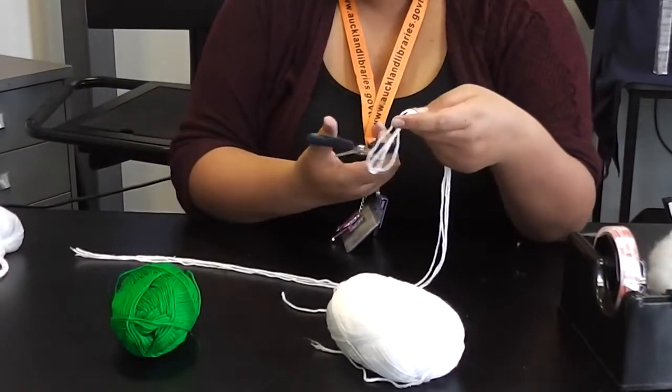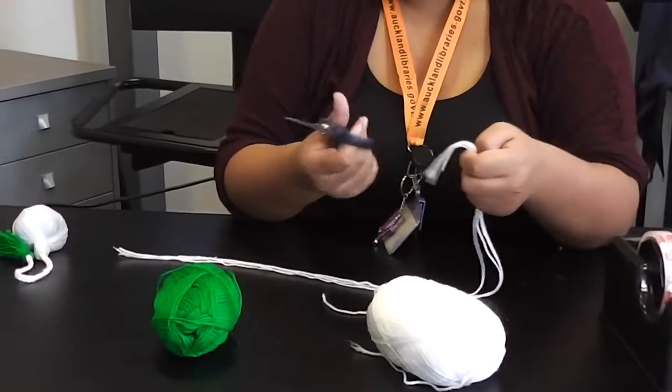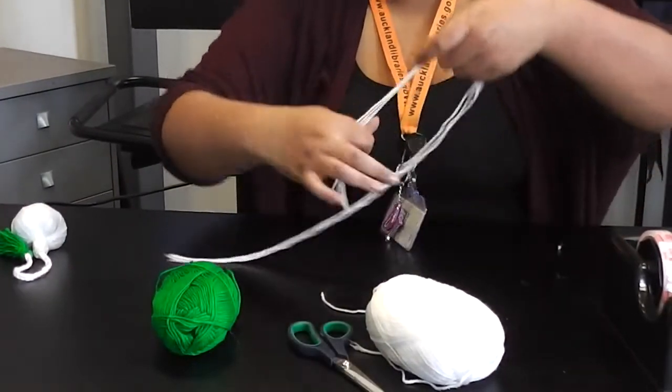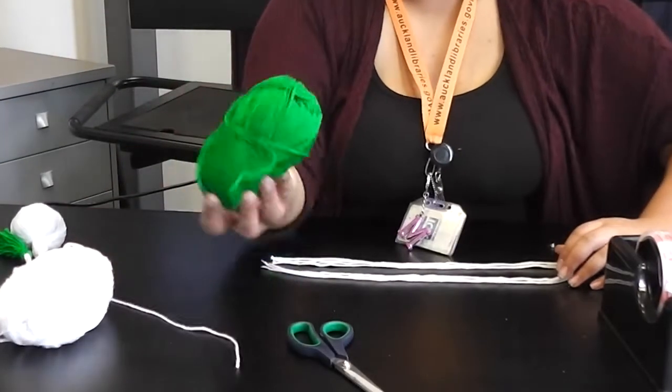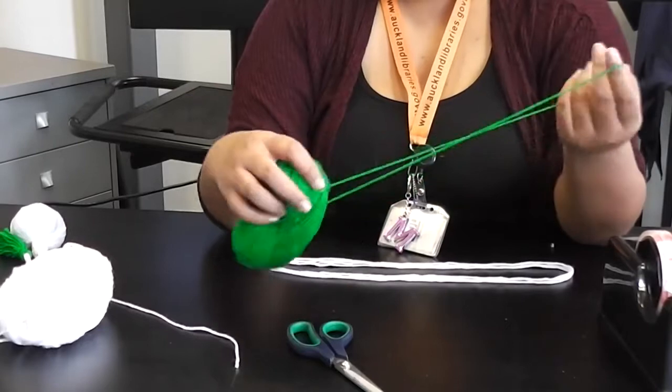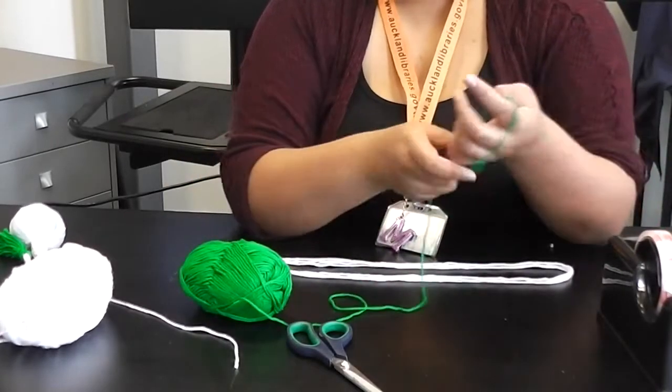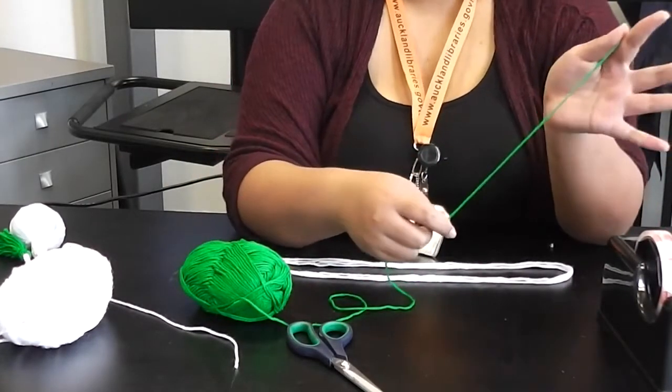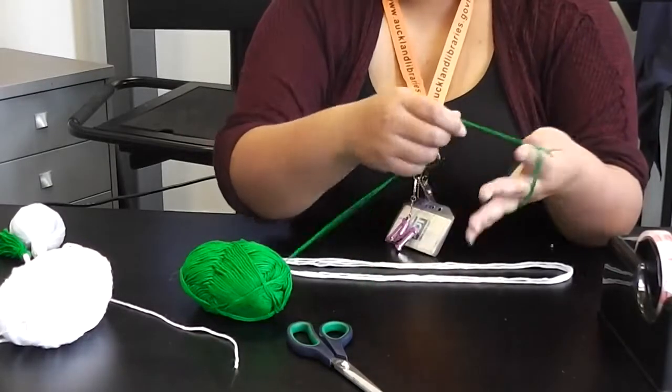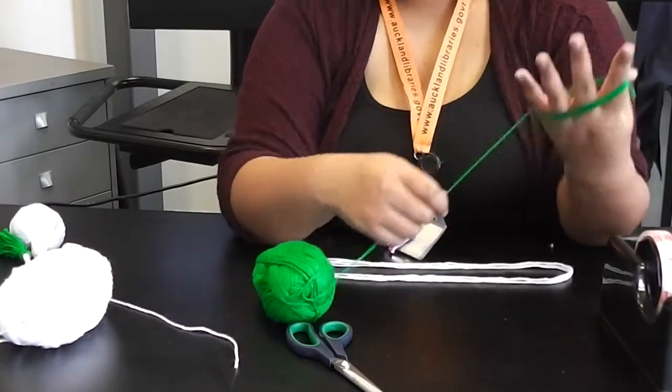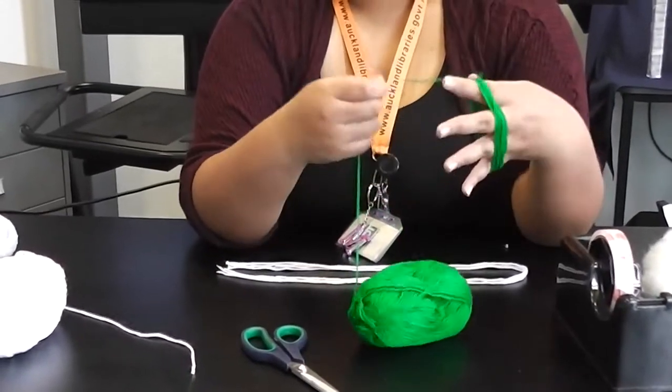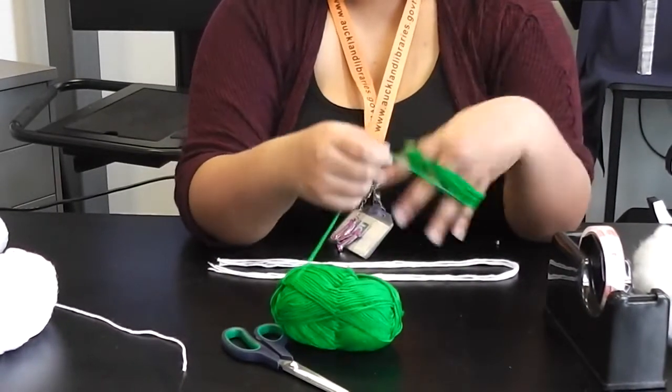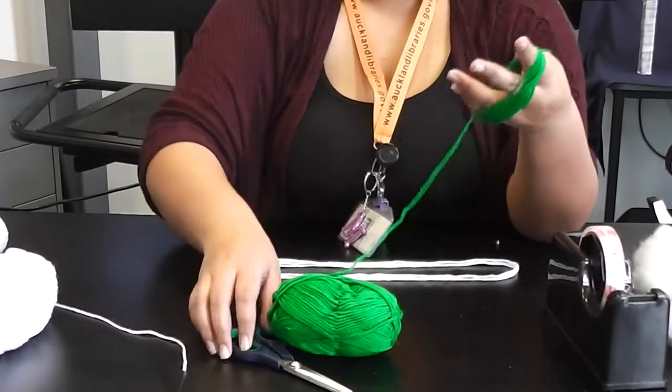So we'll just snip these and put it in half like so. Then we're going to grab the second colour and we're just going to wrap these so we can have the length for our pompom. And you can wrap that about ten times and if you want a bigger pompom you can just wrap it some more. So like 50 or 100 even. And you can also have different colours in your pompom to make it pretty as well.